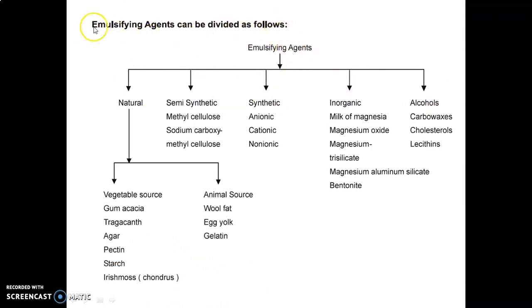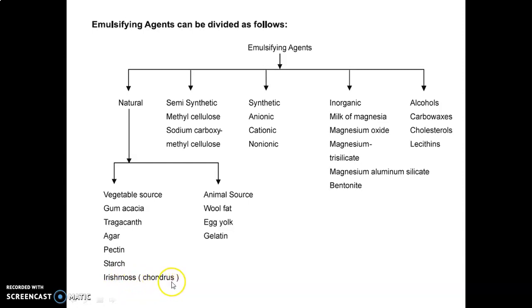Emulsifying agents can be divided as follows: natural, semi-synthetic, synthetic, inorganic, and alcohols. Natural agents have two types — vegetable source and animal source. Vegetable sources include gum acacia, tragacanth, agar, pectin, starch, and Irish moss (chondrus). Animal sources include wool fat, egg yolk, and gelatin. Semi-synthetic agents include methyl cellulose and sodium carboxymethyl cellulose (sodium CMC). Synthetic agents are anionic (negative charge), cationic (positive charge), and non-ionic (no charge).